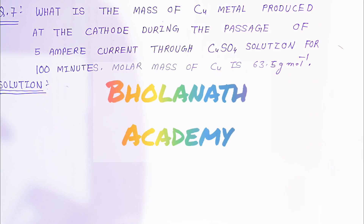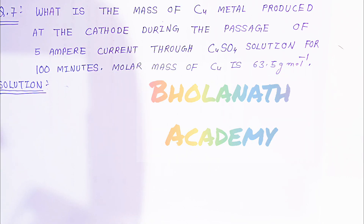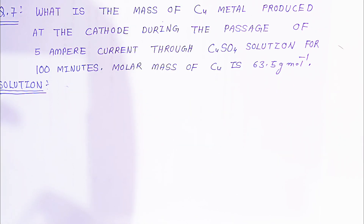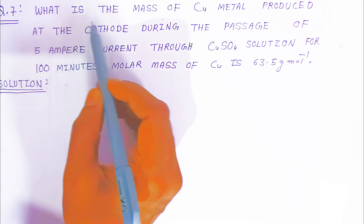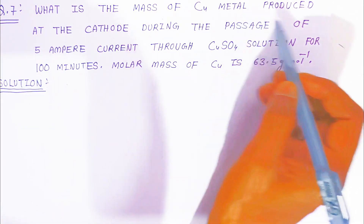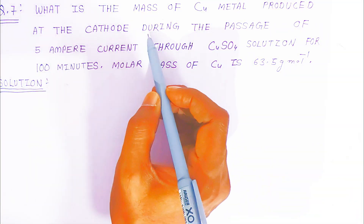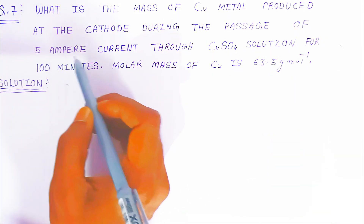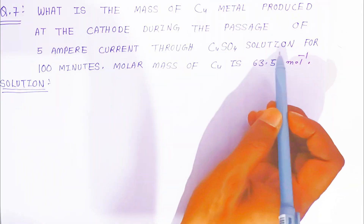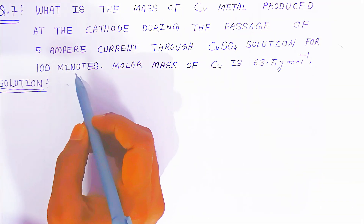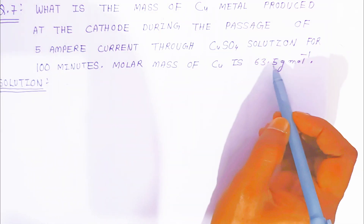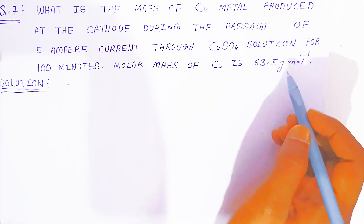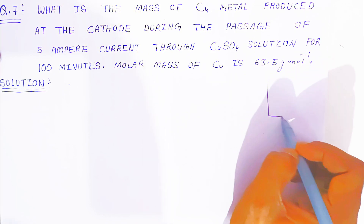Hello students, once again welcome to Bolanath Academy. In this video we are going to see question 7, where we calculate the mass of copper metal produced at the cathode during the passage of 5 ampere current through copper sulfate solution for 100 minutes, when the molar mass of copper is 63.5 gram per mole.